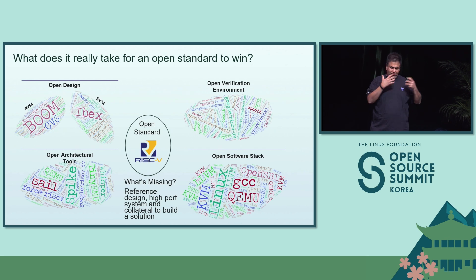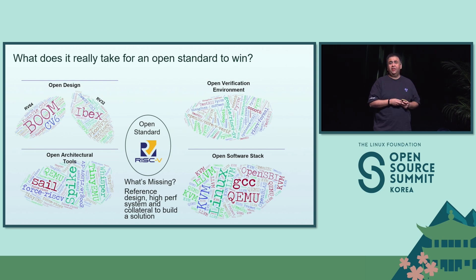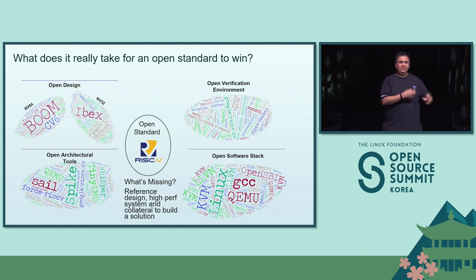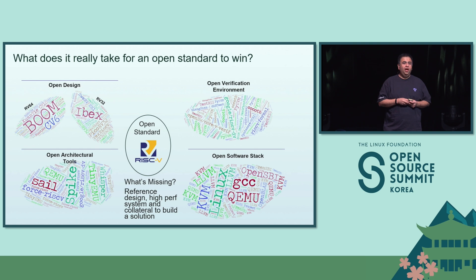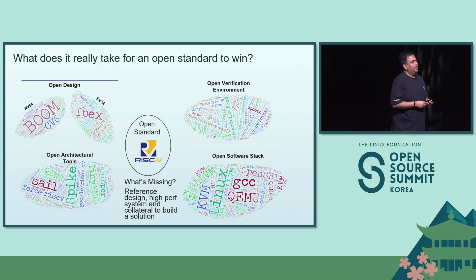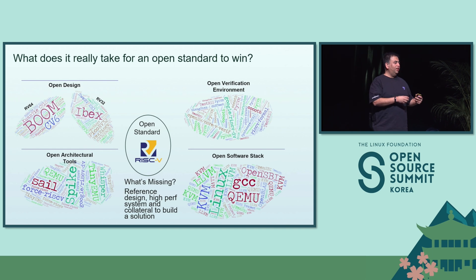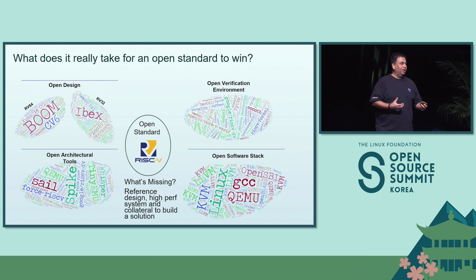In my view, we have really good open designs available for RISC-V, great open source verification environments, and a lot of architectural tools like SAIL, SPIKE, and others. Most critical software is already ported over to RISC-V. But there's one key thing that's lacking: when somebody has to deploy a standard, they're looking for a solution. In order to have a solution, it's really important to have high-performance hardware and a system available for developers to build on. That's a big gap right now in the RISC-V community.